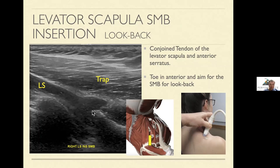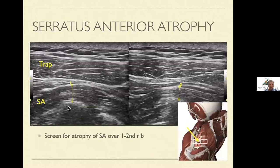Frequently you'll see small avulsions or tears into this area with people with chronic pain at the superior medial border. Once you've established a good toe-in view of levator scap, slide laterally over the second rib and look for serratus anterior. The perimeter border is just right here — what I'm looking for is the serratus anterior muscular thickness.